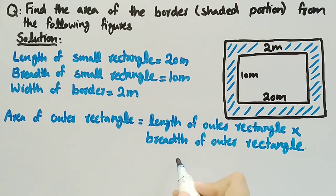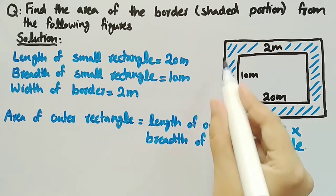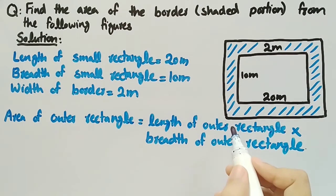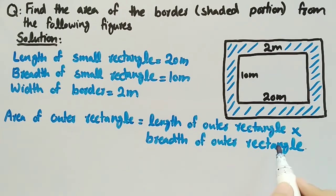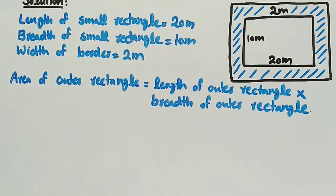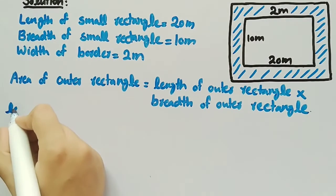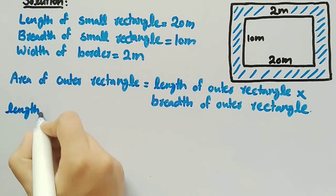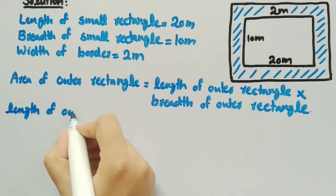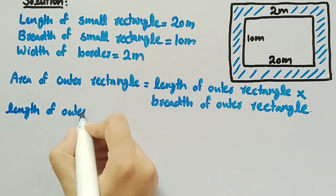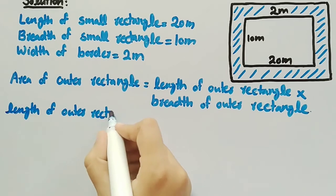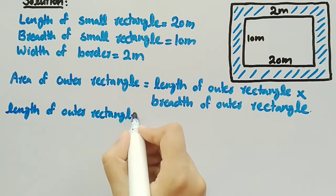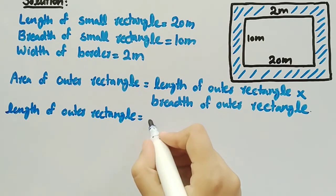Since length and breadth of outer rectangle are not given in the question, we will firstly find the length and breadth of outer rectangle. So now let's find the length of outer rectangle.